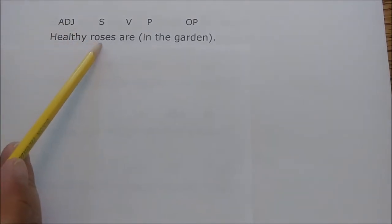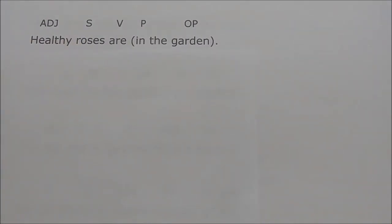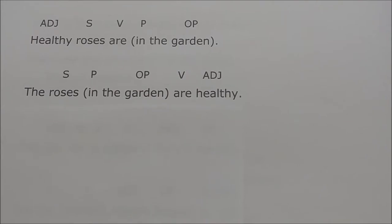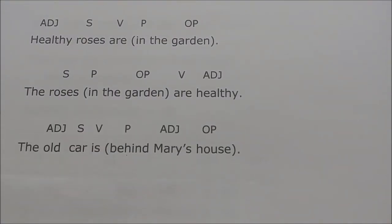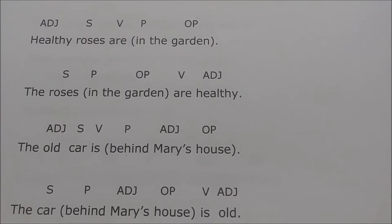Don't be fooled — sometimes adjectives can be distant from the word they describe. In 'Healthy roses are in the garden,' healthy is right next to roses. But in 'The roses in the garden are healthy,' the adjective is far away. Likewise, in 'The old car is behind Mary's house,' old is right next to car, but in 'The car behind Mary's house is old,' old is at the end of the sentence yet still describes car — an example of a distant adjective.